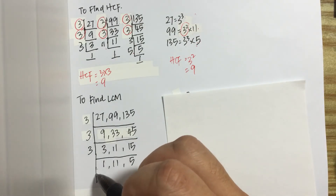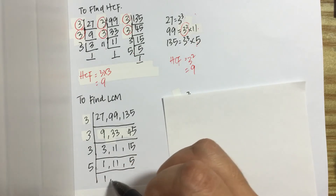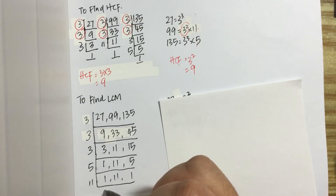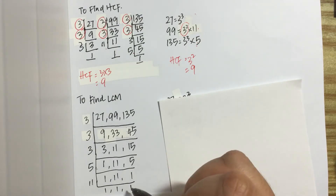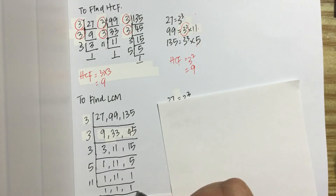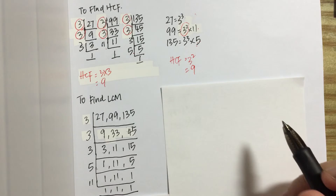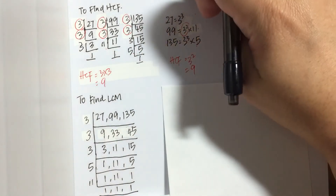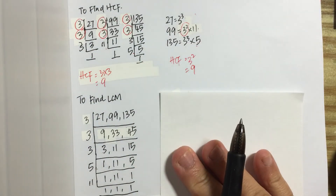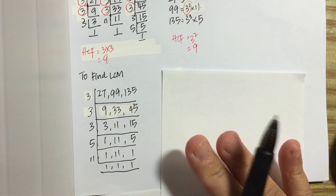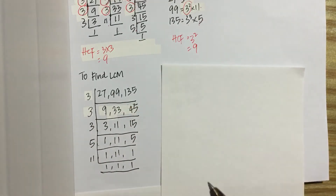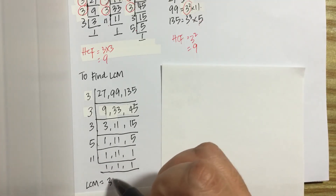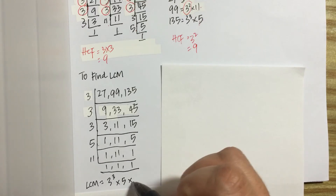The next prime number would be 5. So we get 1, 11, and 1. The last one would be 11, giving us 1, 11, 1, 1 — this is to complete the working. So now we can see that the LCM of these three numbers is the product of all these factors, which is LCM equal to 3 cubed times 5 times 11.